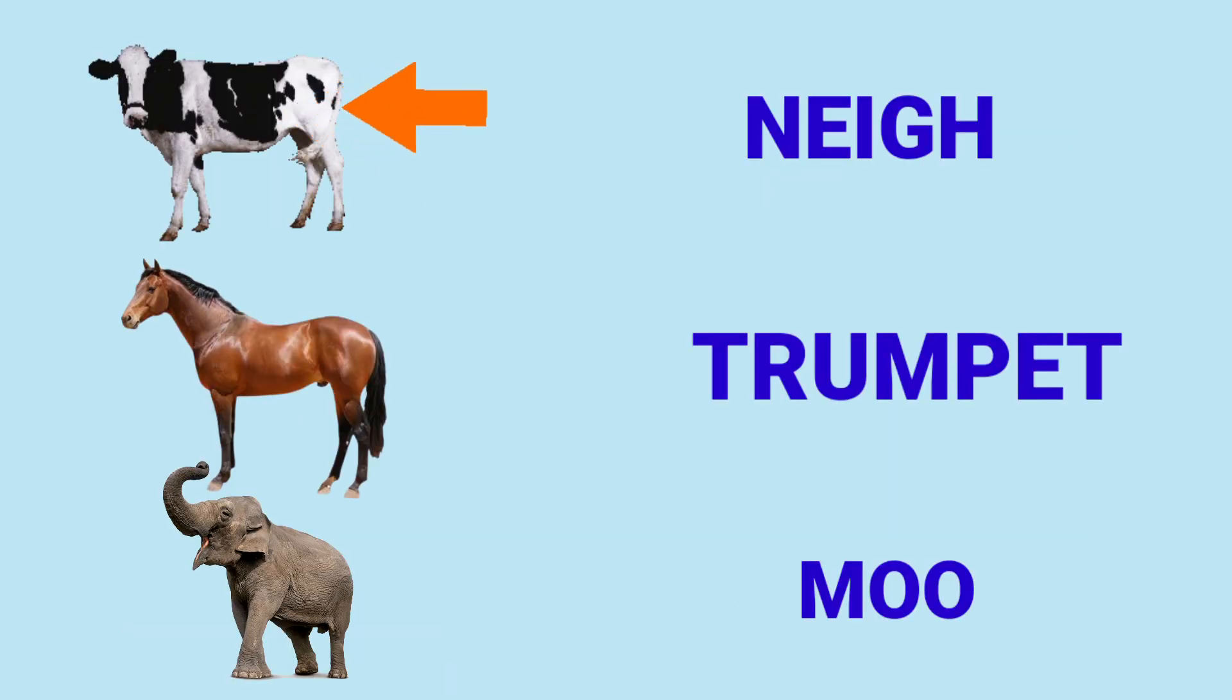Cow. Next, picture. See. See the picture. Cow, horse, and last one, elephant. Cow, moo. Horse, neigh.